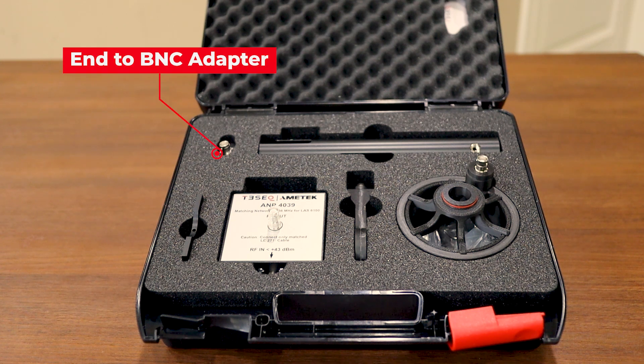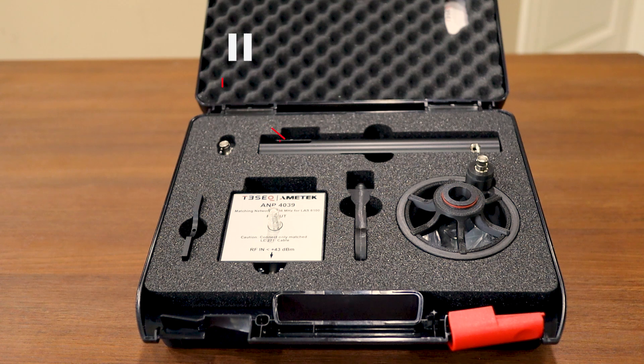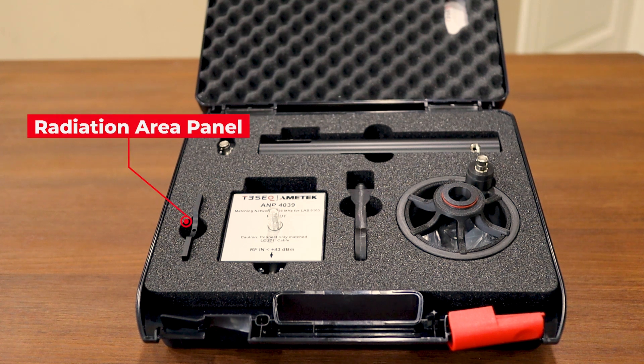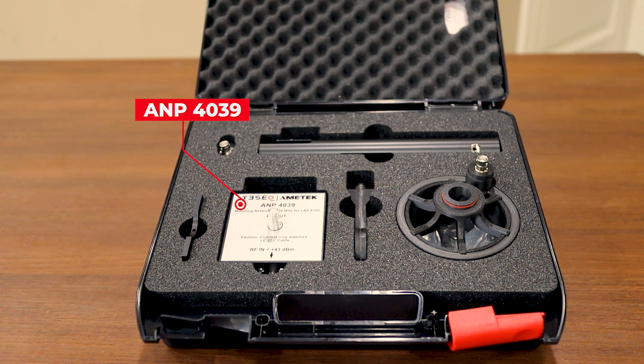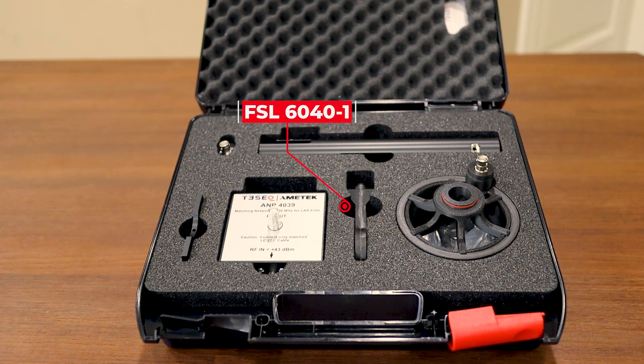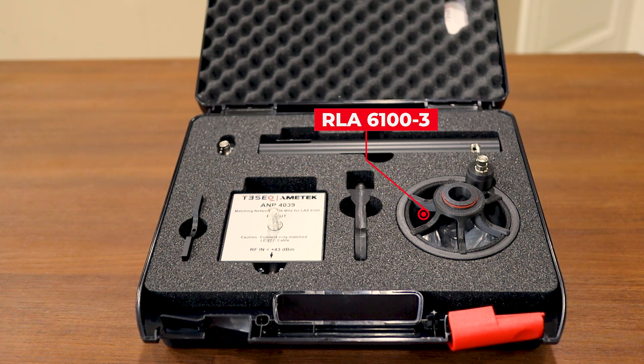Starting on the upper left we have our N to BNC adapter. Next to that we have the tripod fixture. In the lower left corner we have the radiation area panel, and next to that the ANP4039 impedance matching network. As we work our way right, we have the FSL6040-1. And then finally on the right we have our loop antenna, the RLA6100-3, as well as the spacer.